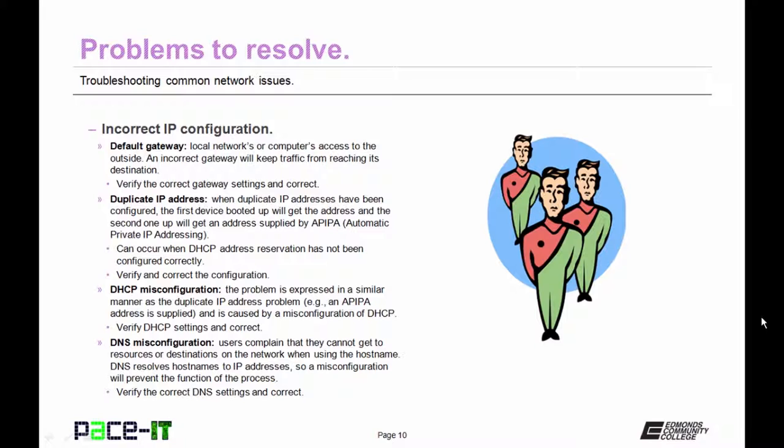There are other DHCP misconfigurations that can occur. The problem is expressed in a similar manner as the duplicate IP address problem, as in an APIPA address is supplied, and is caused by a misconfigured DHCP server. Again, verify your DHCP settings and correct.